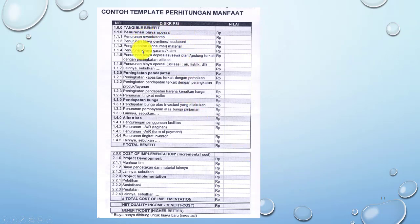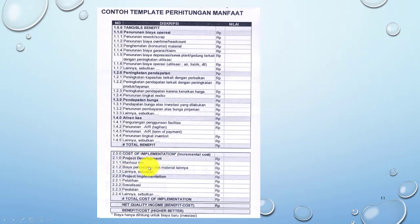Berikut contoh perhitungan manfaat, dapat dilihat pada listnya. Antara lain adalah penurunan biaya operasi, peningkatan pendapatan, pendapatan bunga, dan aliran kas — total benefit adalah total dari poin 1 sampai 5. Kemudian biaya implementasi diantaranya pengembangan proyek dan implementasi proyek, dijumlahkan menjadi total biaya implementasi. Net quality income diperoleh dengan total manfaat dikurangi total biaya yang dikeluarkan. Benefit per cost dihitung dengan menggunakan persentase, yaitu total benefit dibagi dengan total income.